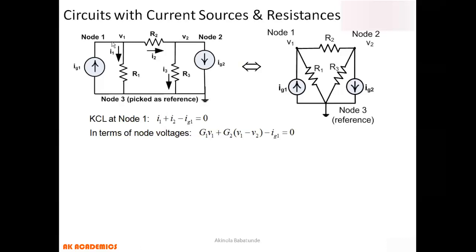Since 1/R2 = G2, the current i2 = G2(V1 - V2). We also have minus ig1 in the KCL equation, giving us: G1·V1 + G2(V1 - V2) - ig1 = 0. That completes the KCL expression at Node 1 in terms of node voltages.